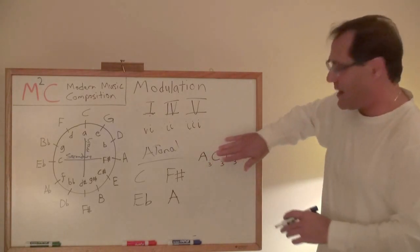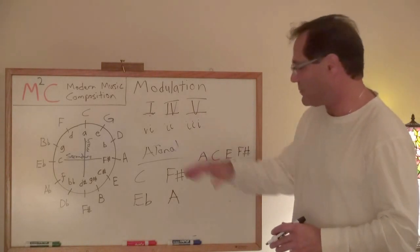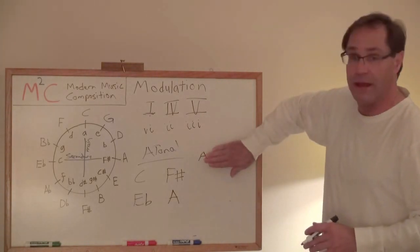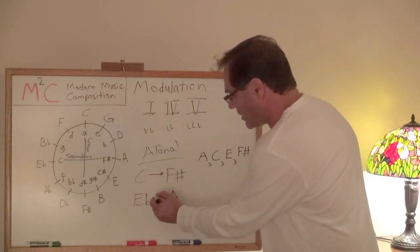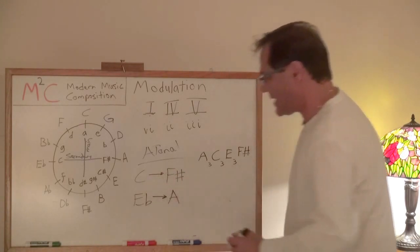But I only showed that just because that is a property, but don't look at it like that. Look at it like C, C's closest relative now is F sharp, E flat's closest relative now is A.